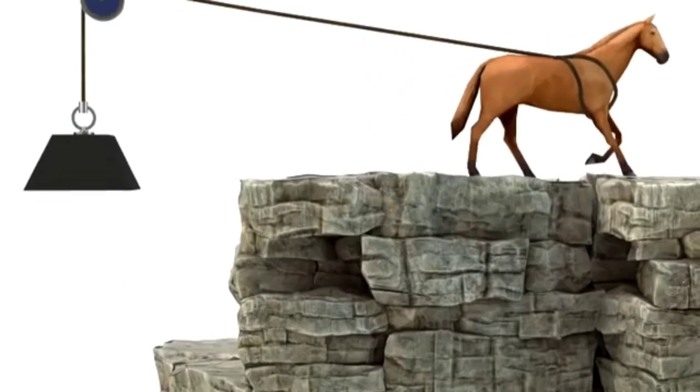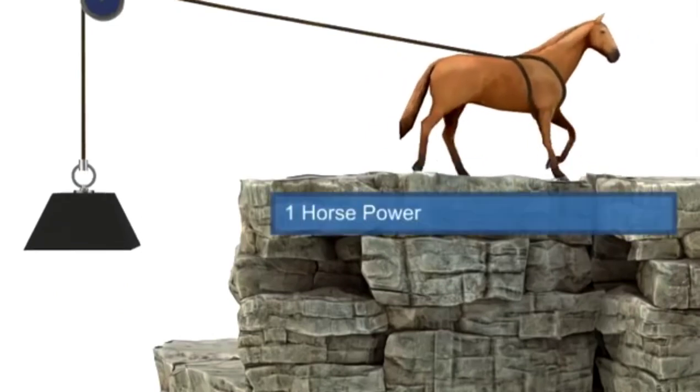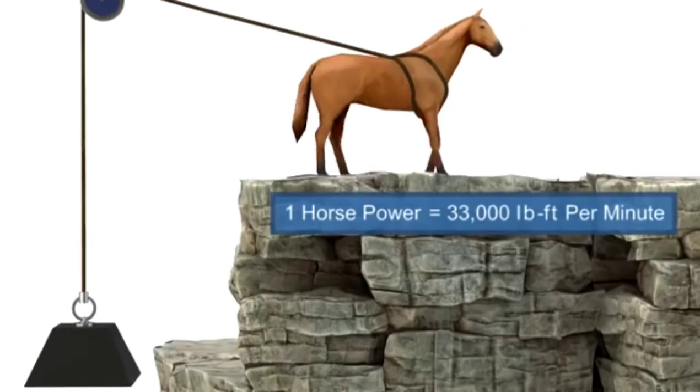It was estimated that one horse could accomplish approximately 33,000 pound foot of work per minute, and thus the term horsepower was born.